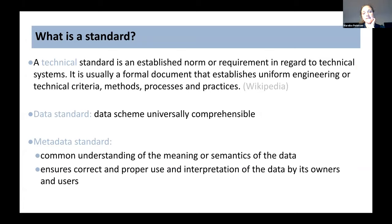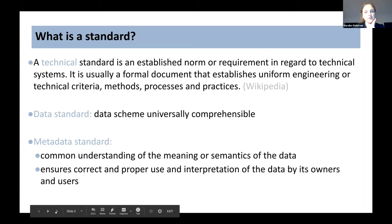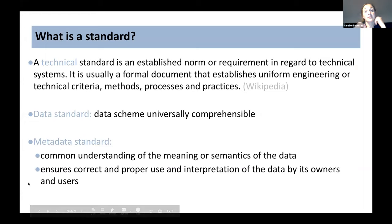A technical standard is an established norm or requirement in regard to technical systems. It is usually a formal document that establishes uniform engineering or technical criteria, methods, processes, and practices. When it comes to data, it's a data scheme which is universally comprehensible. And when it comes to metadata — the data about data — it's a common understanding of the meaning and semantics of the data. This ensures a correct and proper use and interpretation by the data owner, but also by the users.